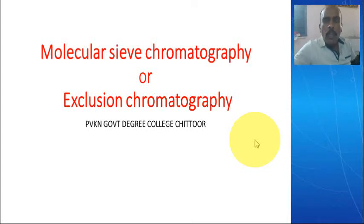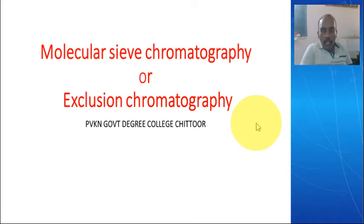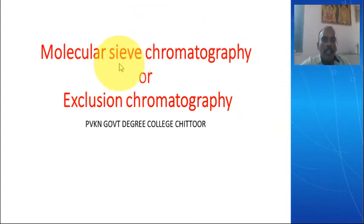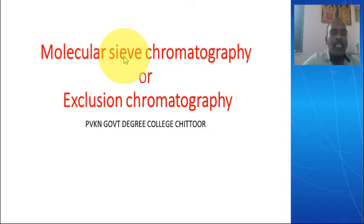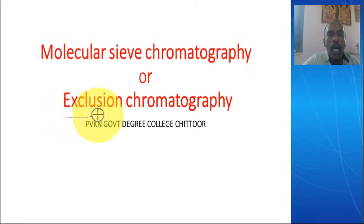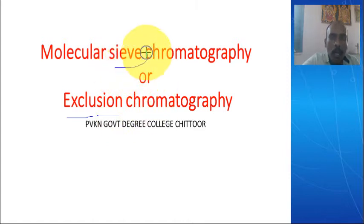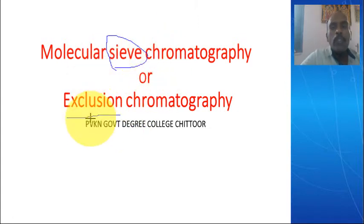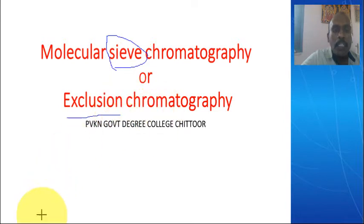Good morning students. Today we will discuss molecular sieve chromatography. It has another term: exclusion chromatography. Here 'sieve' refers to gel particles in the stationary phase that act as a sieve. It is also an application of column chromatography, where certain types of molecules — particularly large particles — are excluded and not able to enter into the gel particles. That is why it is termed exclusion chromatography.